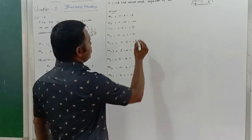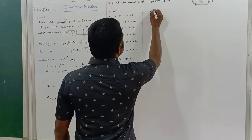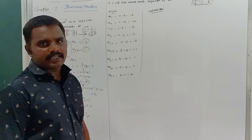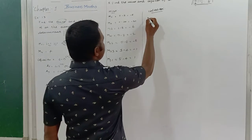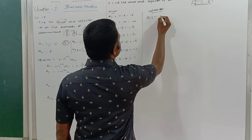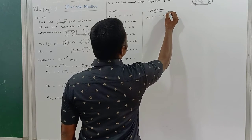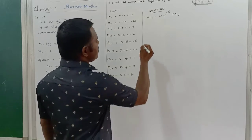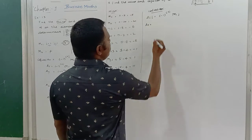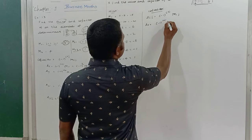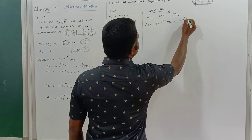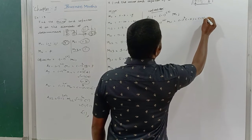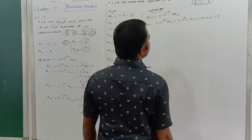Now for the cofactors, using Aij = (-1)^(i+j) × Mij. Cofactor A11 = (-1)^(1+1) × M11 = (-1)^2 × (minus 5) = +1 × (minus 5) = minus 5.